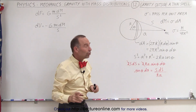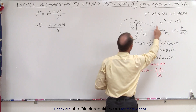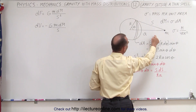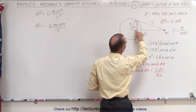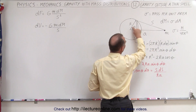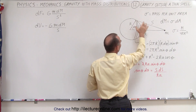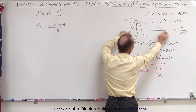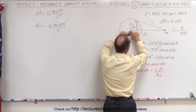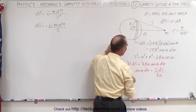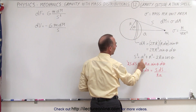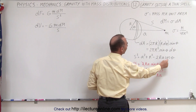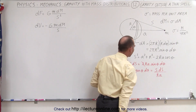We also need to know the distance from the mass to the top of each strip — that's equal to s. Using the law of cosines with angle θ, we have r and a (the constant distance from the mass to the center of the shell), so s² = a² + r² − 2ra cosθ.